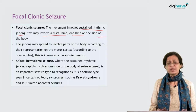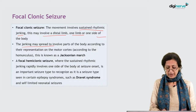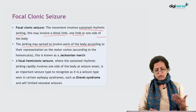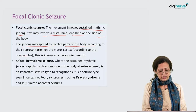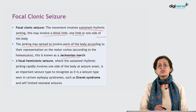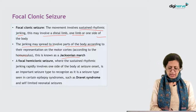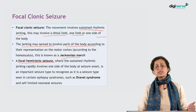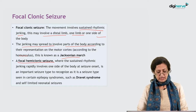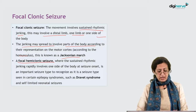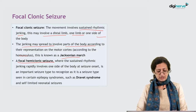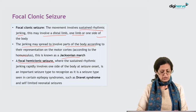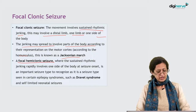Focal clonic seizures involve sustained rhythmic jerking, which may involve a distal limb, one limb, or one side of the body. The jerking may spread according to cortical representation on the motor cortex — the homunculus — known as the Jacksonian march. A focal hemiclonic seizure, where sustained rhythmic jerking rapidly involves one side of the body at seizure onset, is an important type to recognize as it is seen classically in epilepsy syndromes like Dravet syndrome and some self-limited neonatal seizures.